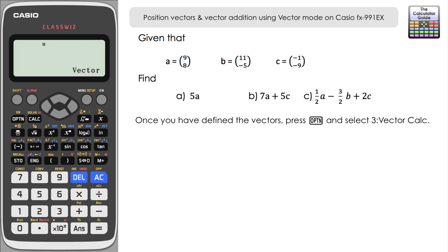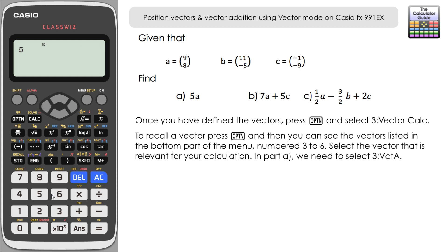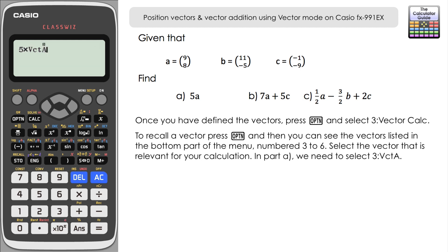For part a we want five lots of vector A. Input 5, then press Option and select vector A from the menu — that's option 3 to select vector A. Press equals and the calculator gives us five times vector A: the result is 45 and 40.